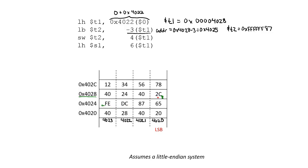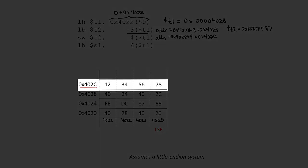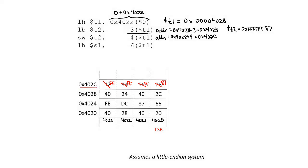We can move on to the next instruction, which is going to store the value in T2 into the address, which is a combination of T1 — still 0x4028 — plus the immediate value 4, meaning we're going to store an entire word into address 0x402C. That means we're going to take the value in T2 and put it into that address. What is currently in 0x402C is going to be replaced by the value in T2, giving us six F's followed by 87 in the least significant byte.